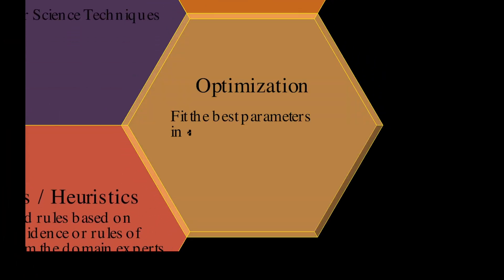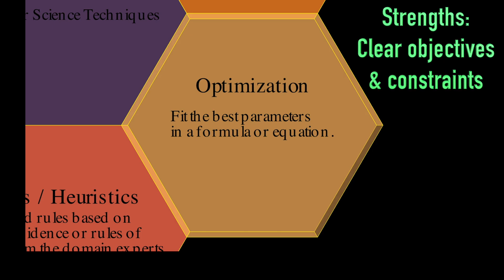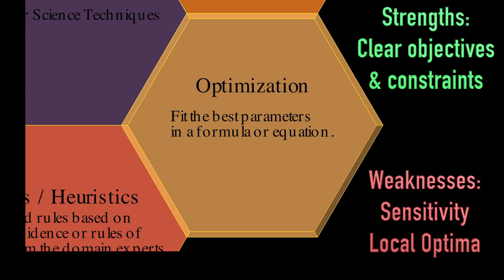Optimization finds the best parameters for a given formula or equation to maximize or minimize specific outcomes. Strengths? They're highly effective for problems with clear objectives and constraints. Weaknesses? They can be sensitive to initial conditions and may find local rather than global optima.